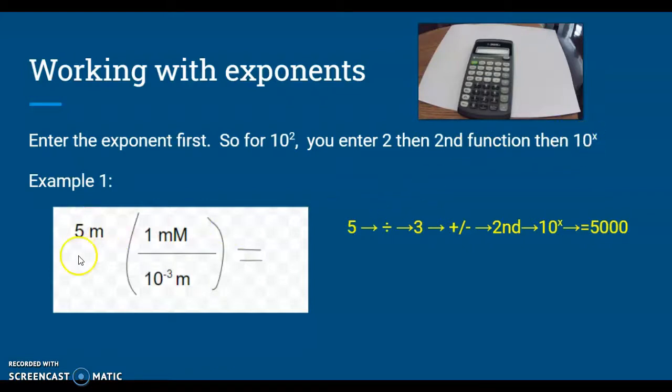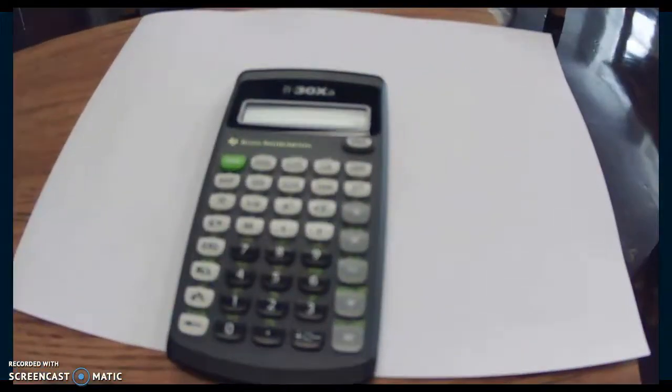For example, here we have 5, and because of our dimensional analysis, we're going to divide by 10 to the minus 3. In order to do that, you're going to plug in 5 and then divide it by... Now we have to get negative 3 as our exponent. We're going to type in 3. We're going to use our plus and minus toggle to make it negative 3. Then we're going to hit second function, then 10x, and you should get 5,000 if you go through this. Let me just show you that real quickly.